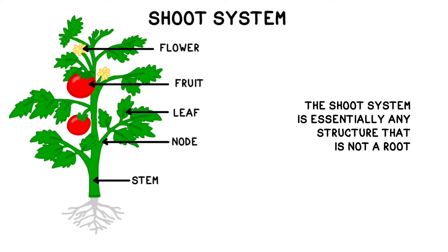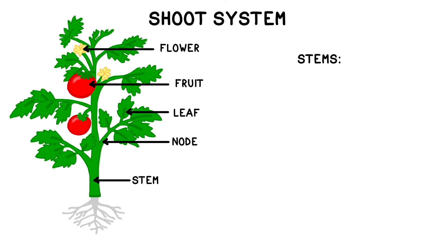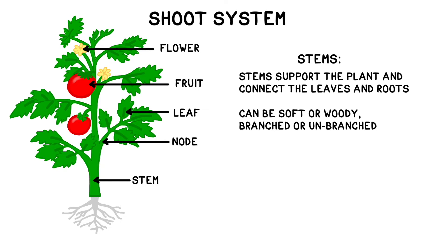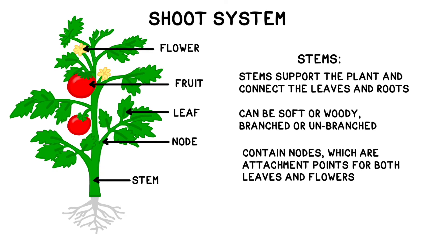Now let's move on to the shoot system, which consists of stems, leaves, fruits, and flowers — or basically any structure that is not a root. Stems provide support and also connect the leaves, where photosynthesis occurs, with the roots, where some of the products are stored. Stems come in many shapes and sizes and can be soft, woody, branched, or unbranched. Stems also contain nodes, which are the attachment points for both leaves and flowers. The areas between the nodes are called internodes.